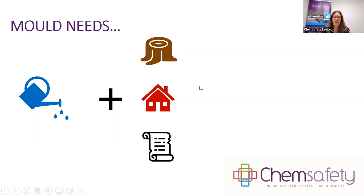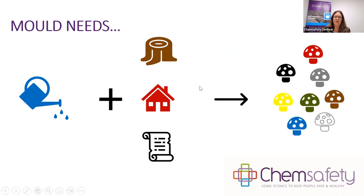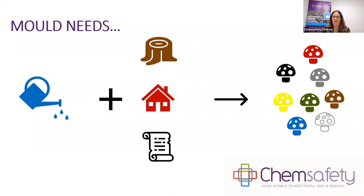With food and water we get mould, and the pretty colours of those mushrooms are there on purpose. We see mould in lots of different colours — mainly white, brown, black and grey — but certainly in many other colours as well because there are so many different varieties.